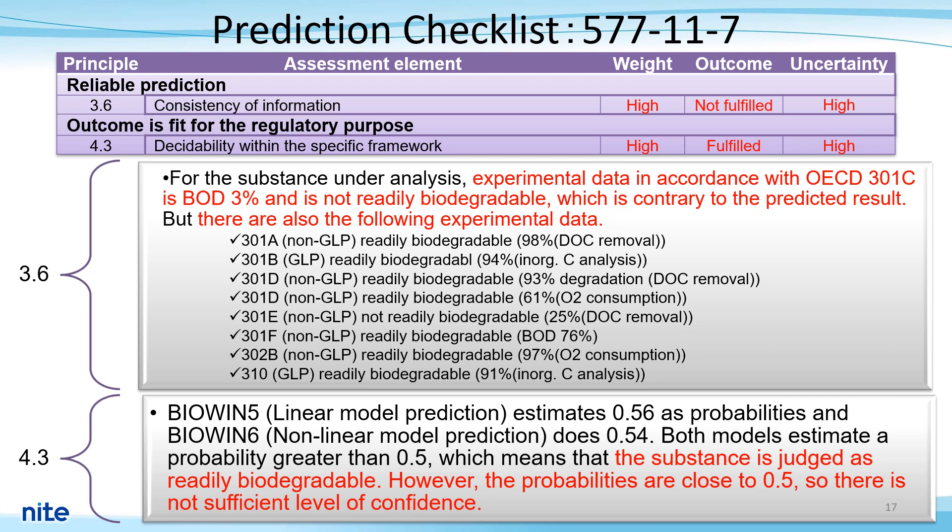About 4.3, this item checks whether the predictions are within the range of the threshold and at the required level of confidence, especially when a threshold exists in the regulation. BioWin 5 estimated 0.60 as a probability and BioWin 6 estimated 0.54. Both models estimated probabilities greater than 0.5, which means that the substance is judged to be readily biodegradable. However, the probability is close to 0.5, which is not sufficiently reliable. Hence, the outcome was set to fulfilled and uncertainty to high.